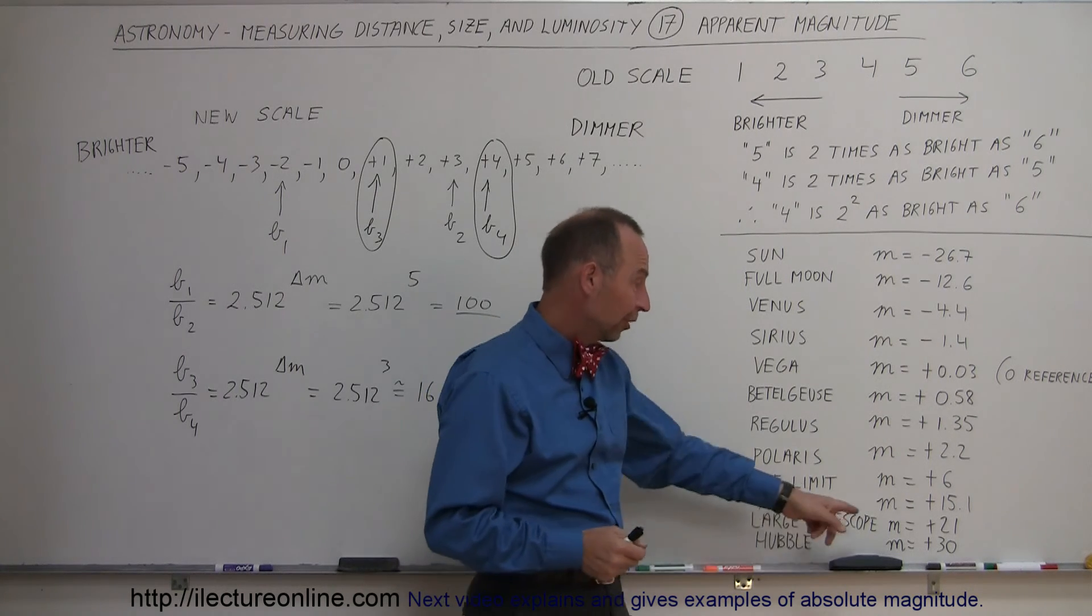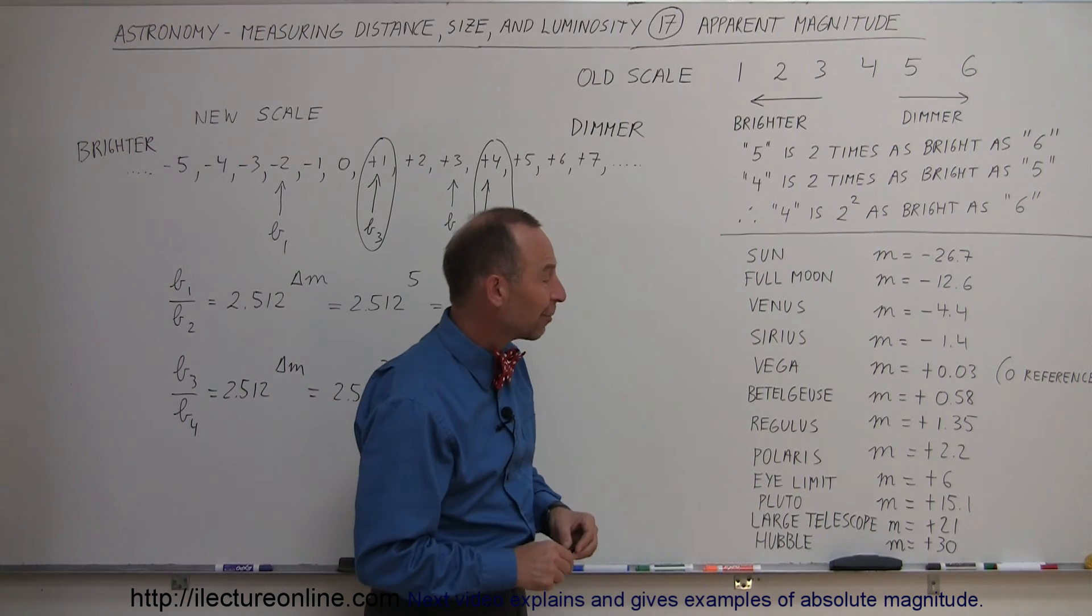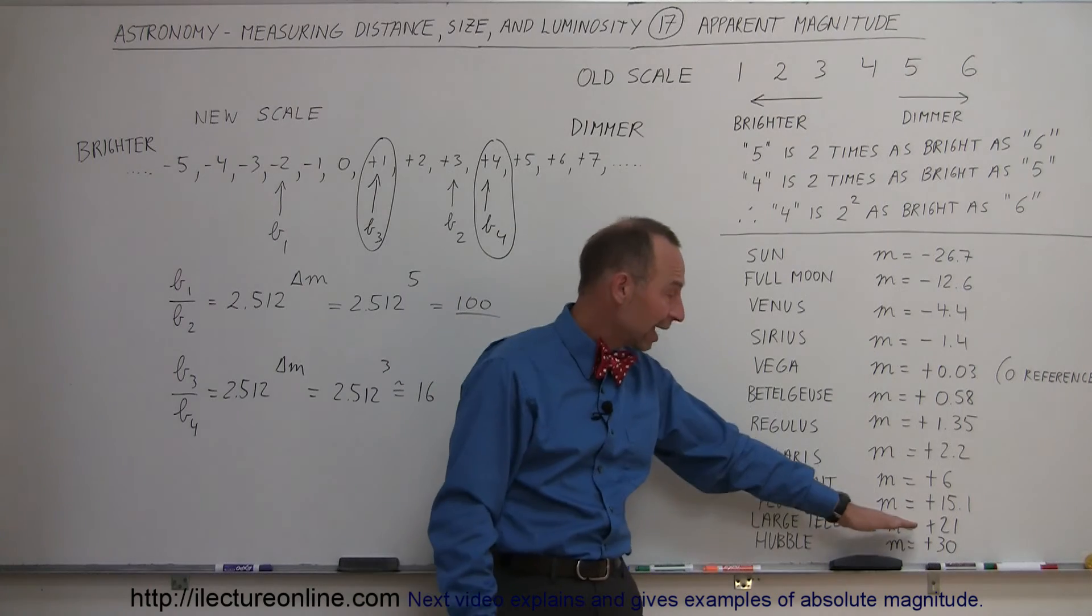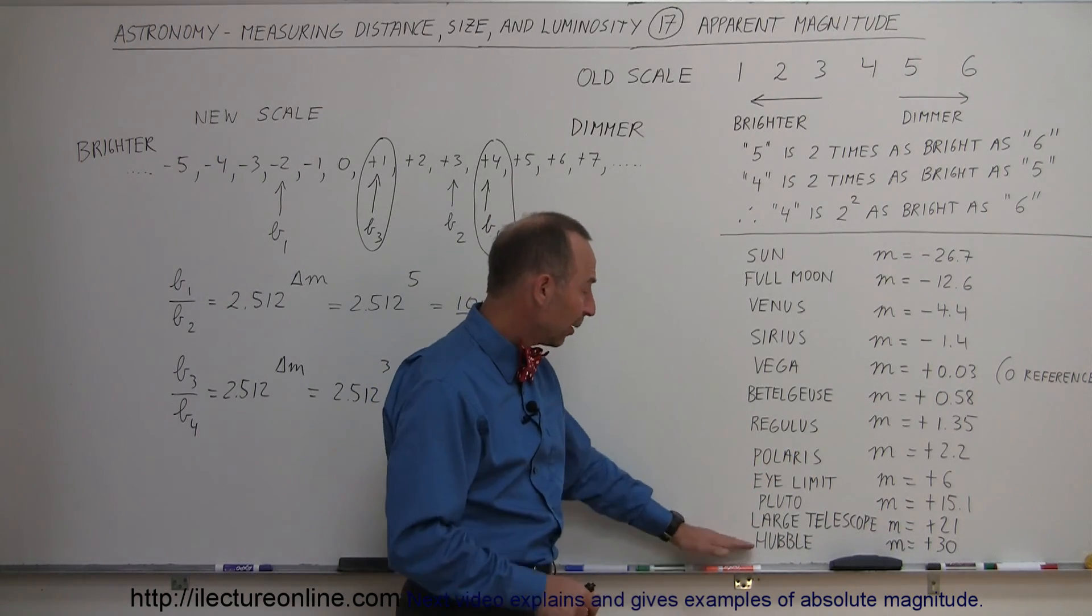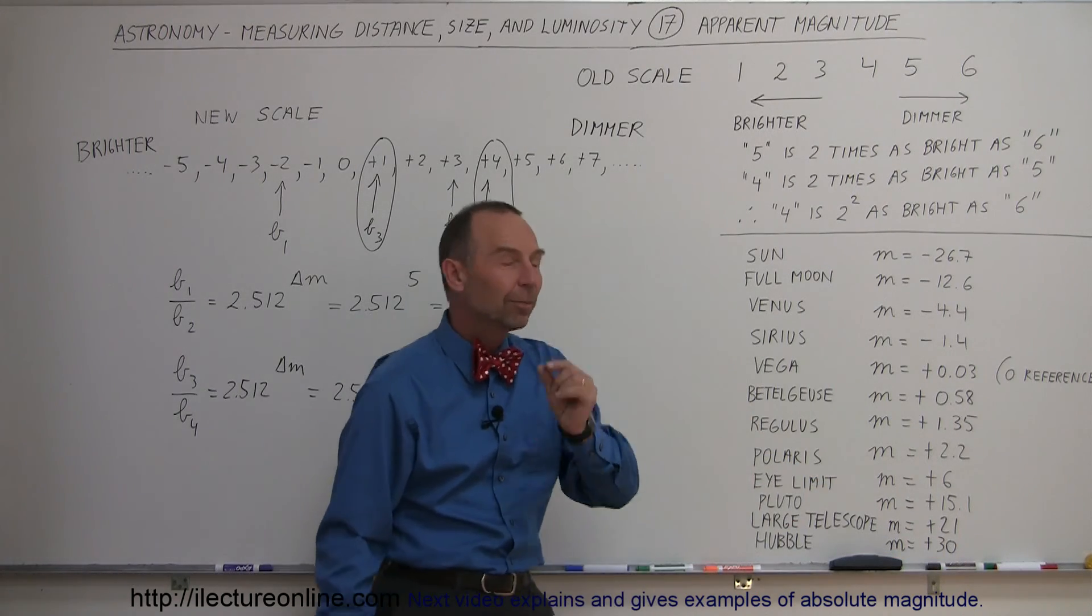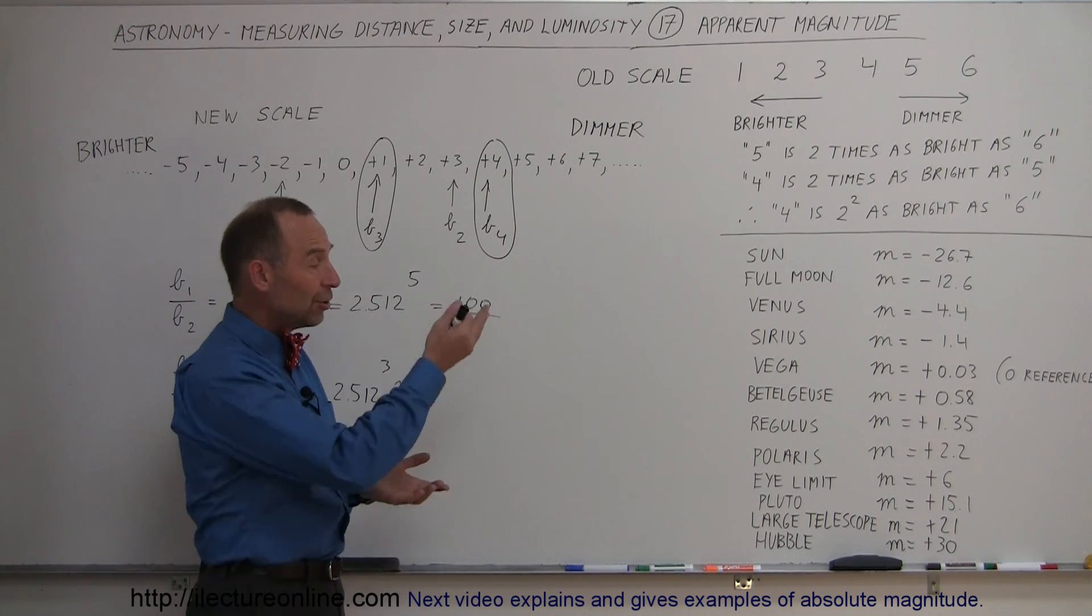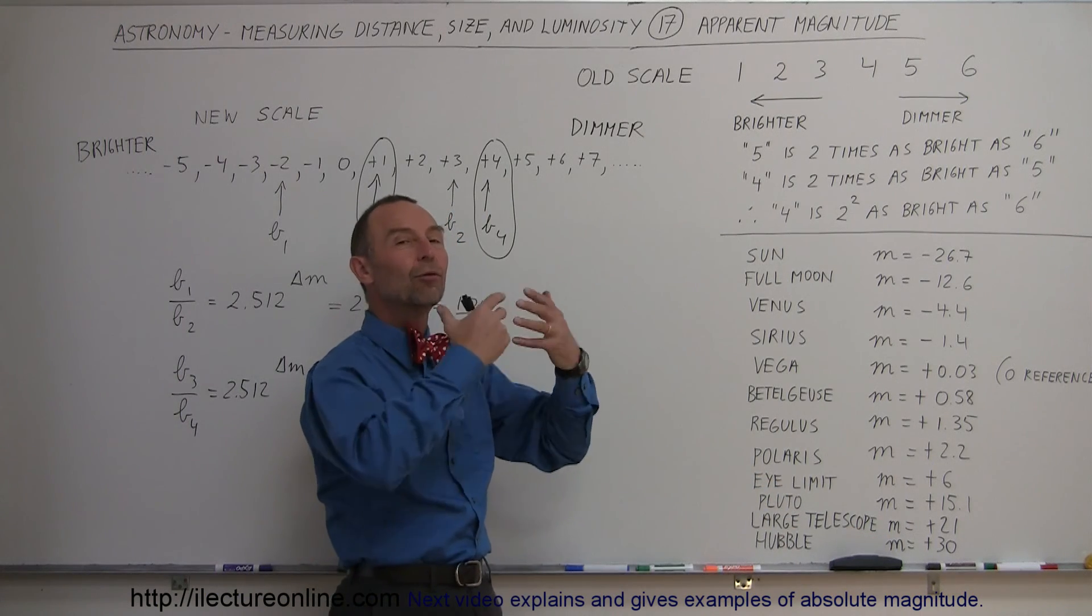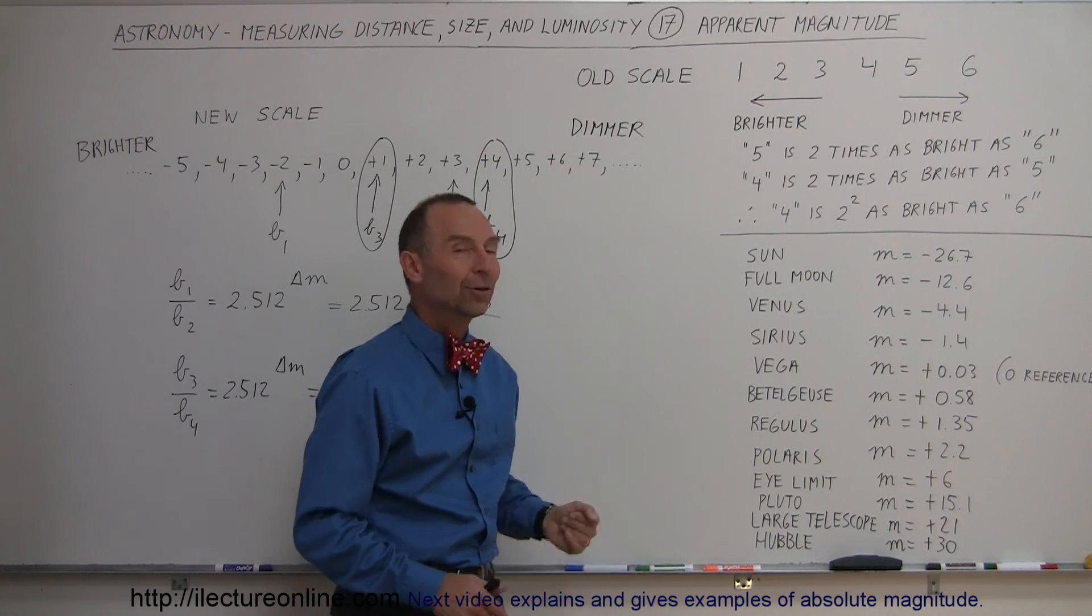Pluto, very small trans-Neptunian object, several billion miles away from here, has a magnitude of plus 15. The most powerful telescopes on the Earth tend to have a magnitude of plus 21, although now with special techniques, they can go beyond that. The Hubble Space Telescope has a magnitude of plus 30, and they've actually gone a little bit beyond that as well to like about plus 31 point something. You can realize, you can see enormous amount of detail with Hubble Space Telescope because it can see objects so far away.